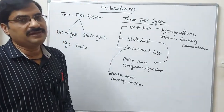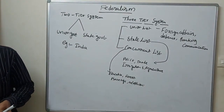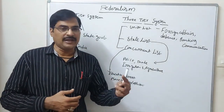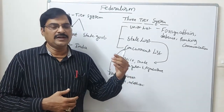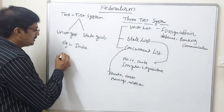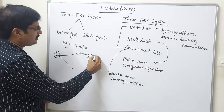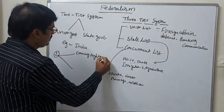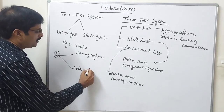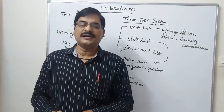For the government to run smoothly at the central and state level, power is divided into two types: coming together federalism and holding together federalism. There are two kinds of federalism - coming together federalism and holding together federalism.